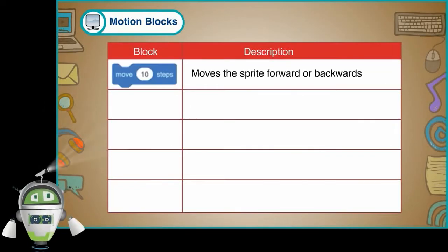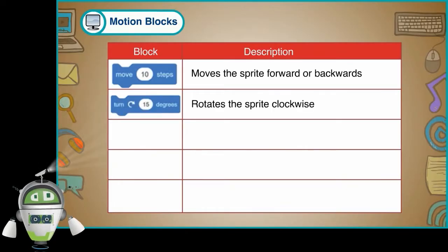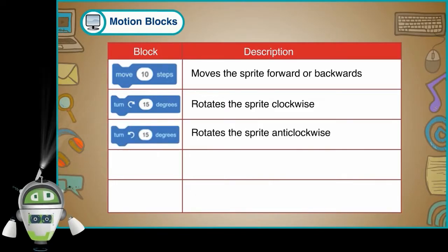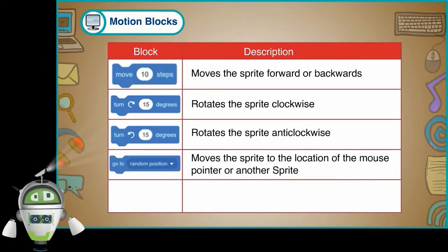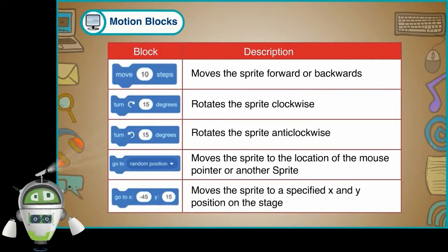Move 10 Steps: Moves the sprite forward or backwards. Turn right 15 degrees: Rotates the sprite clockwise. Turn left 15 degrees: Rotates the sprite anti-clockwise. Go to random position: Moves the sprite to the location of the mouse pointer or another sprite. Go to x, y: Moves the sprite to a specified x and y position on the stage.